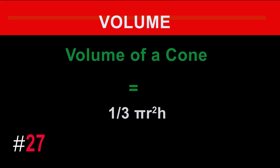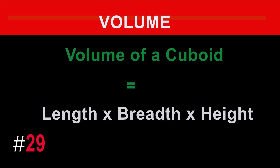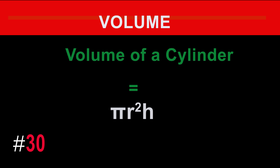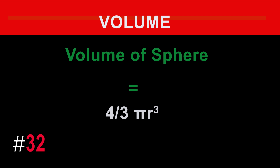The formula for the volume of a cone is: volume equals one-third pi r squared times height. The formula for the volume of a cube is: volume equals length cubed. The formula for the volume of a cuboid is: volume equals length times breadth times height. The formula for the volume of a cylinder is: volume equals pi r squared times height. The formula for the volume of a prism is: volume equals base area times height. The formula for the volume of a sphere is: volume equals four-thirds pi r cubed.